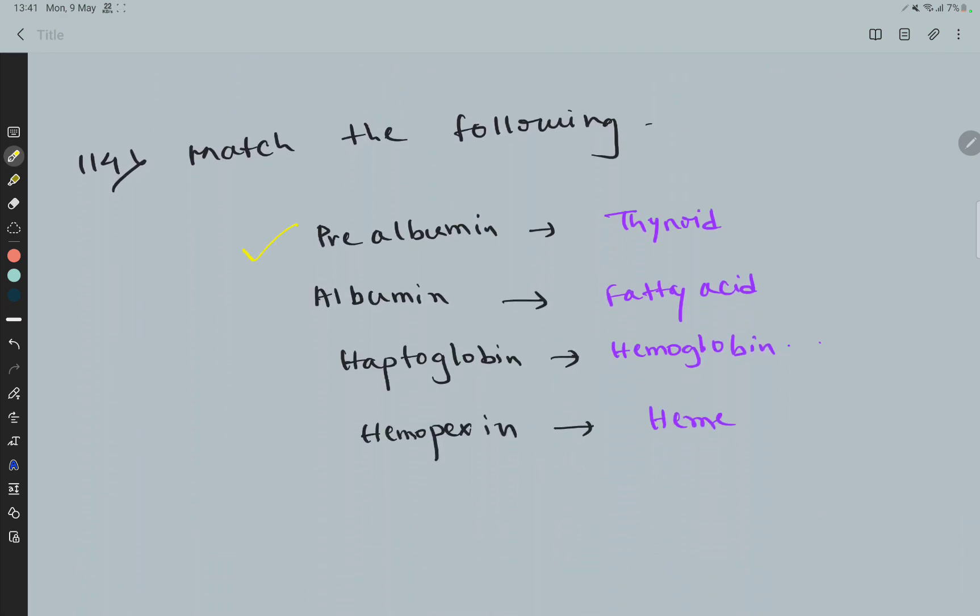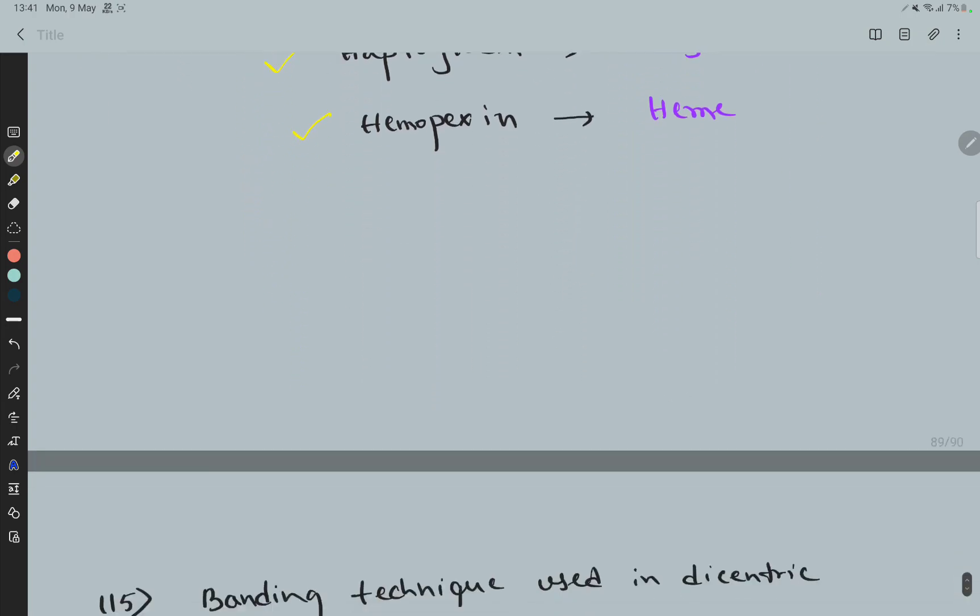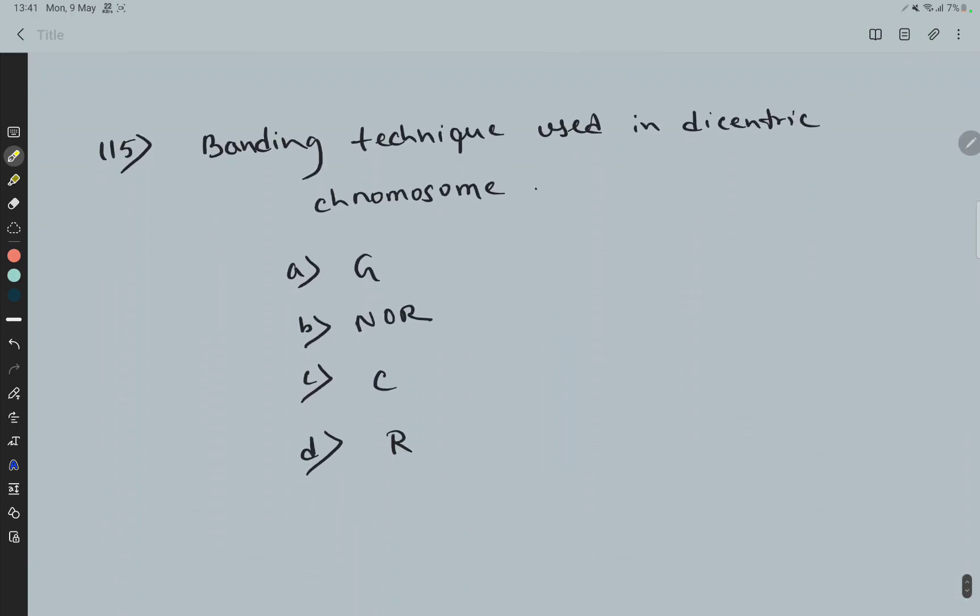...prealbumin to thyroid, albumin to fatty acid, haptoglobin to hemoglobin, and hemopexin to heme. Question 115: Banding technique used in dicentric chromosome...